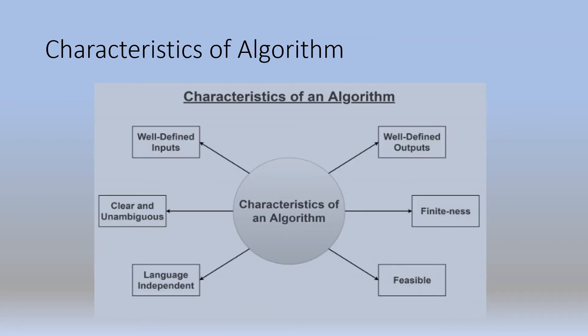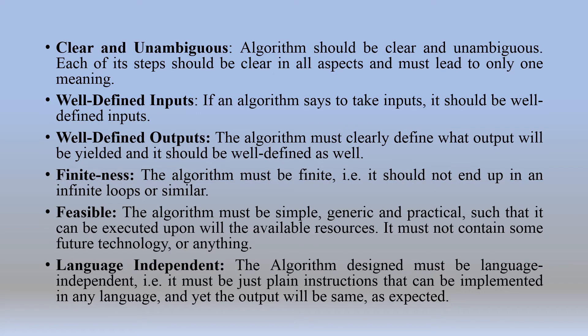Now we will find the characteristics of an algorithm. It should be finite — not infinite. You must be able to generate the inputs and generate the outputs. The important characteristics are: well-defined inputs, well-defined outputs, finiteness, feasible, language independent, and clear and unambiguous. An algorithm should be clear and unambiguous — each of its steps should be clear in all aspects and must lead to only one meaning. The endpoint should be unique.